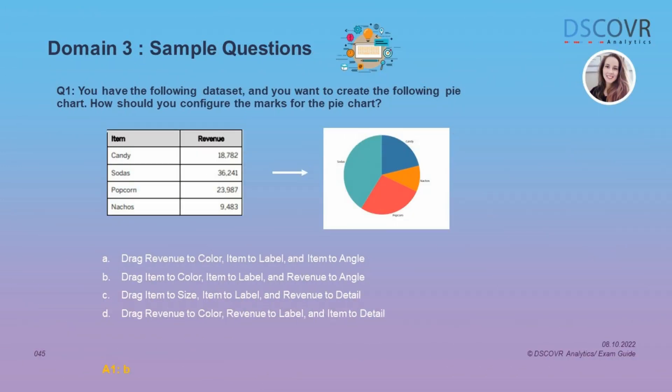In this question we're given a data set which consists of revenue for each item, and we want to use this data set to create a pie chart. The question is asking us how would you configure the marks for this pie chart, and the answer here is B. If you struggled answering this question, make sure you review different types of charts and the steps you would take to create those charts, because you may also see similar questions on dual axis charts, histograms, and other commonly used chart types.